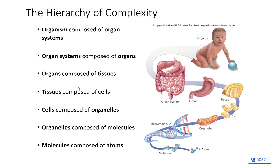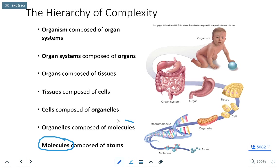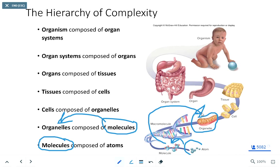This is the hierarchy of life — we'll start from the bottom and work our way up. We start with an atom. If we take two or more atoms and combine them together, we can make a molecule. If we take multiple molecules working together, we can make an organelle. Those atoms combine to make molecules, and those molecules can then make an organelle. If we take multiple organelles working together for a similar purpose, we make a cell.